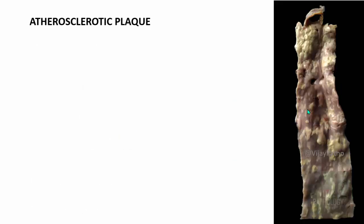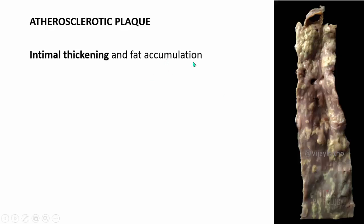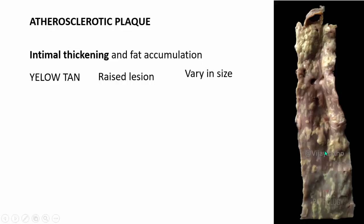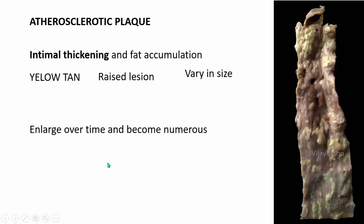What are these plaques? These are atherosclerotic plaques. You call it a plaque whenever there is intimal thickening because of fat accumulation. They are yellow-tan raised lesions that can vary in size. This is a section of abdominal aorta — you can easily make out that there are various yellowish-white lesions throughout the wall in the tunica intima. These are raised lesions, variable in size, and they enlarge over a period of time and can become numerous.